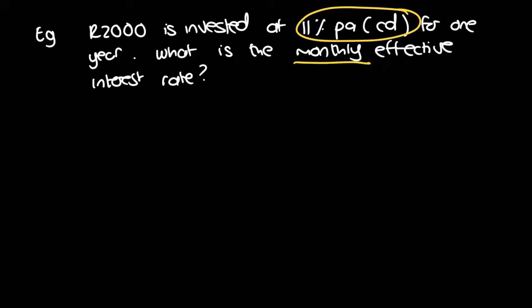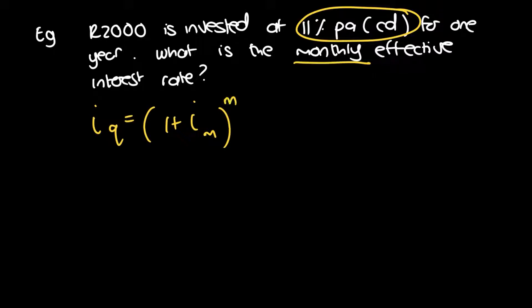The moment you see that you want a conversion involving compounding periods and interest rates, you use IQ equals 1 plus iM to the power of M over Q, minus 1. That's the formula you know you're heading for.